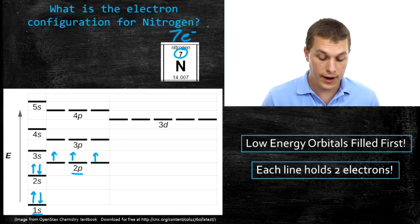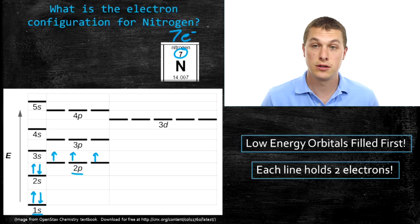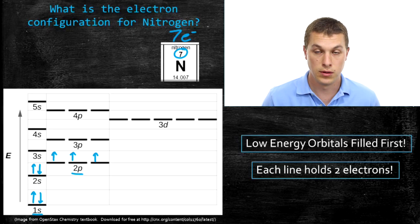Now that we've filled the 2s, the next lowest energy is the 2p. We've already taken care of 4 of the 7 electrons, so we have 3 more to put in: 1, 2, 3. That gives us a total of 7 electrons. Now we know where they are: 2 electrons are in the 1s orbital, 2 electrons are in the 2s orbital, and 3 electrons are in the 2p orbital.